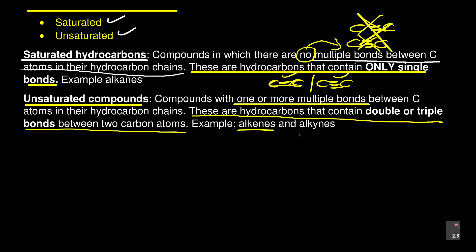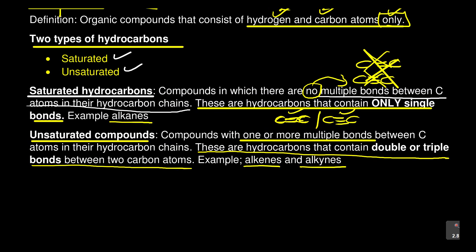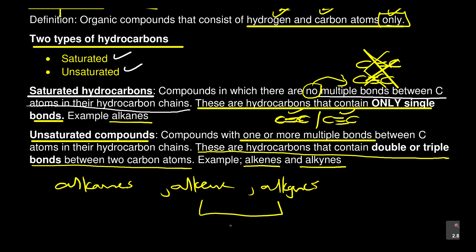Examples of unsaturated hydrocarbons are alkenes and alkynes. These are the three hydrocarbons you'll be learning about: alkanes, alkenes, and alkynes. Alkenes and alkynes belong to unsaturated hydrocarbons, and alkanes belong to saturated hydrocarbons.